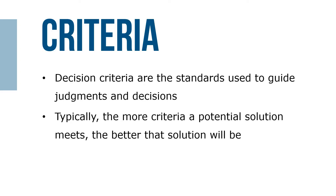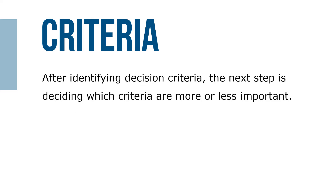Decision criteria are the standards used to guide judgments and decisions. Typically, the more criteria a potential solution meets, the better that solution will be. After identifying decision criteria, the next step is deciding which criteria are more or less important. Although there are numerous mathematical models for weighing decision criteria, all require the decision-maker to provide an initial ranking of the criteria.